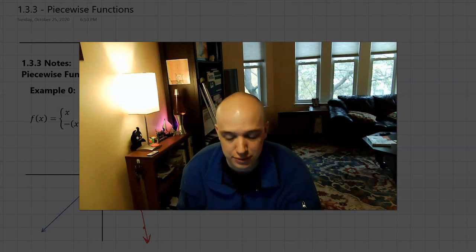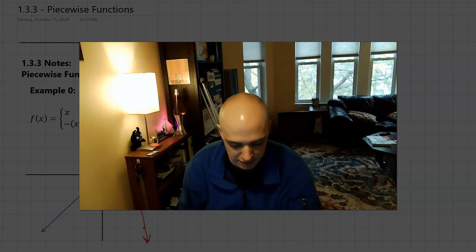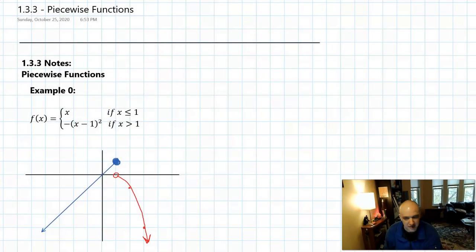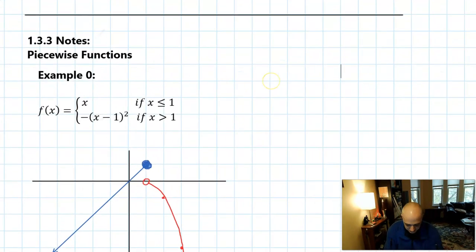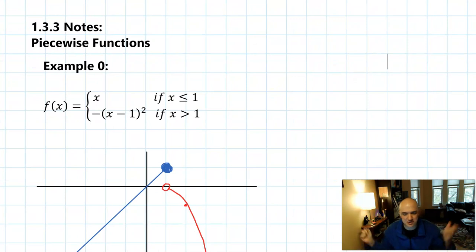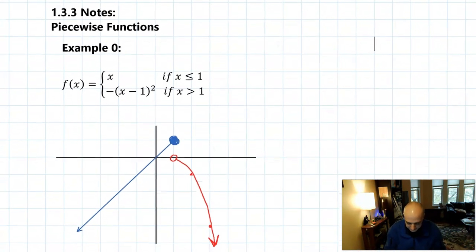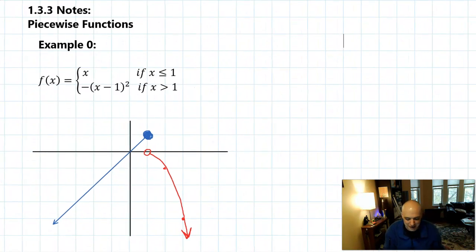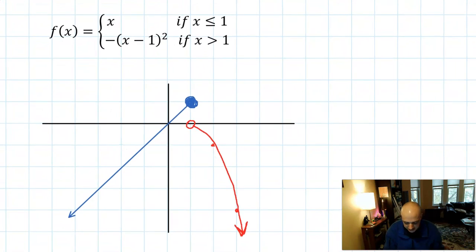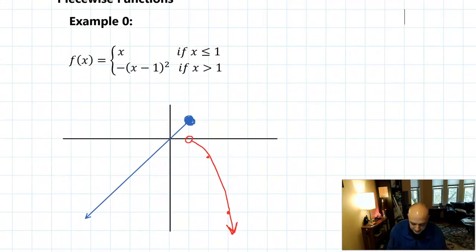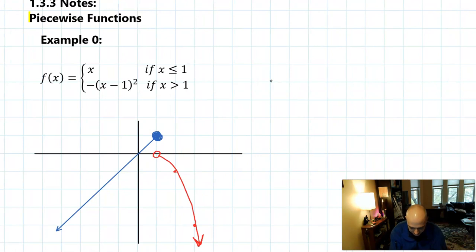Hello everybody. Mr. Eck here to get you with some notes on piecewise functions. This is another one of these topics that is in section 1.3. It's kind of a section that's just all about all the different kinds of functions. But piecewise functions are a pretty neat type of mathematical object in that they are a function and a graph that actually comes in multiple pieces, which is why they have that name, piecewise functions.